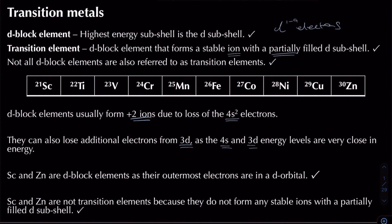Scandium forms a 3+ ion and zinc forms a 2+ ion. Scandium doesn't qualify as a transition metal because when you lose three electrons from the 21-electron atom to form Sc3+, you do not have a partially filled d subshell. Zinc has 30 electrons, and when it loses two electrons to form Zn2+, you also don't get a partially filled d subshell, so zinc is also not a transition metal.